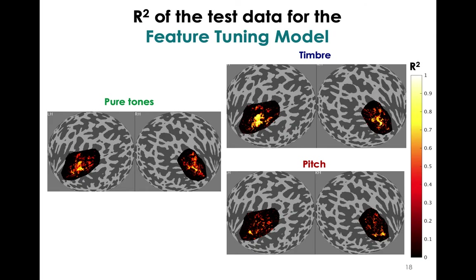Looking at the variance explained maps — using cross-validation, these are the R-squared maps for the test data — the variance explained values appear to be higher for pure tones and timbre, and less high for pitch. The patchiness of the pitch R-squared maps is probably why we're seeing more noise in the center frequency maps for pitch.